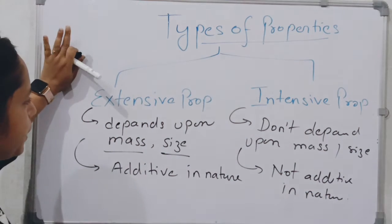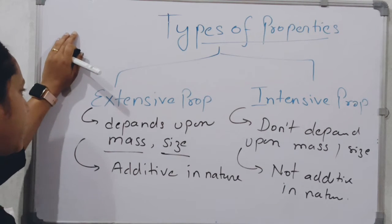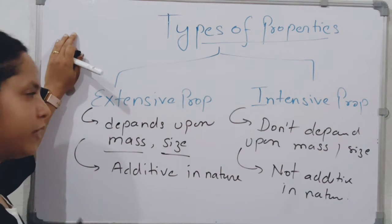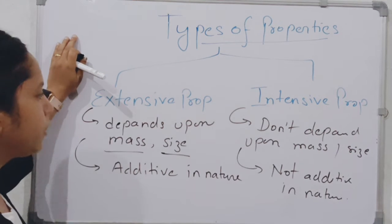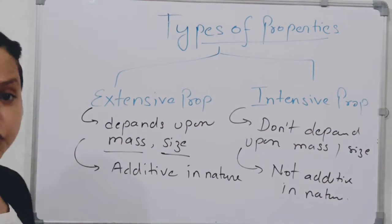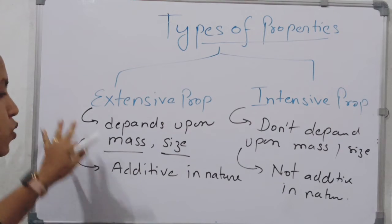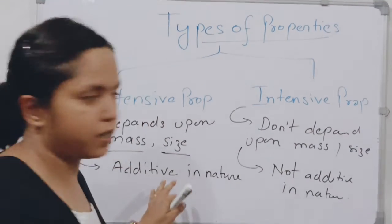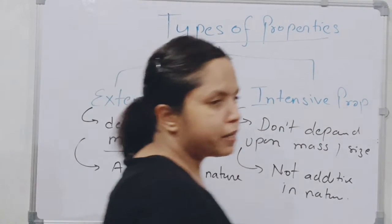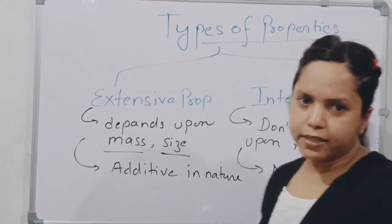In exams they directly ask you, sometimes they also ask from definition - what is the definition of extensive property or intensive property, whether it depends upon mass and size or not, and whether it's additive in nature or not. Some assertion and statement type questions. That is why this topic is going to be very important for GATE. Don't think that because it's a small topic and I'm taking only 4-5 minute session, this topic is not important for exam.